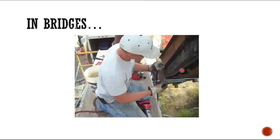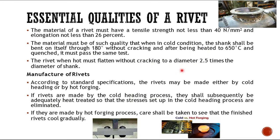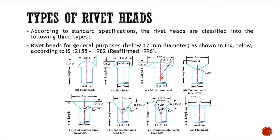In bridge construction, rivets are also used. These were some essential qualities or minimum requirements for the rivets. These were the types of rivets according to the shape of the head: snap head rivet, pan head rivet, mushroom head, countersunk head, flat countersunk head, flat countersunk head of 60 degree, 90 degree, round countersunk of 60 degree, and flat heads.